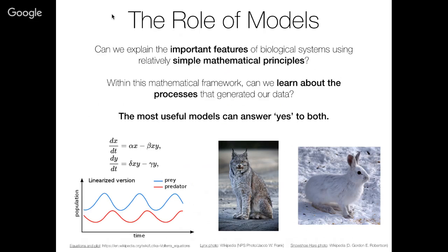The role of mathematical models in biology, I would argue, is to ask whether we can explain broad features of biological systems using relatively simple mathematical principles. If we can, hopefully we can use those frameworks to learn about the underlying processes that generate our data or observations. The most useful models are those that do a good job of capturing important features and can be used to probe the underlying processes in more detail. This is just the Lotka-Volterra predator-prey dynamics equations, which have been used heavily in ecology to understand population dynamics.